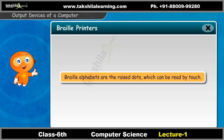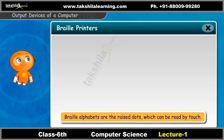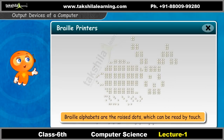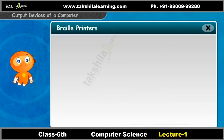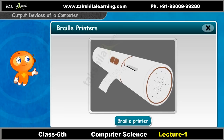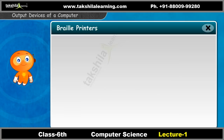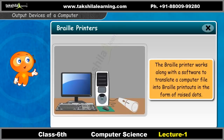Do you know that blind people can also read text? They use braille alphabets to read the text. Braille alphabets are raised dots which can be read by touch. The raised dots can be printed using a braille printer. The braille printer works along with software to translate a computer file into braille printouts in the form of raised dots.